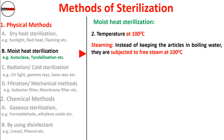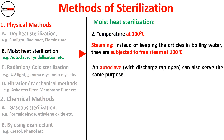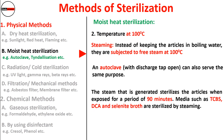Steaming: instead of keeping articles in boiling water, they are subjected to free steam at 100°C. An autoclave with the discharge tap open can also serve the same purpose. The steam sterilizes articles when exposed for a period of 90 minutes. Media such as TCBS, DCA, and selenite broth are sterilized by steaming.